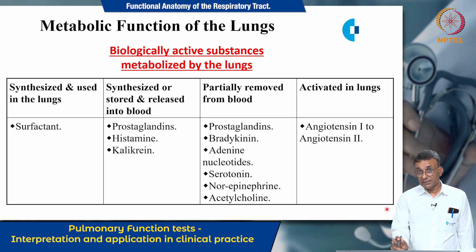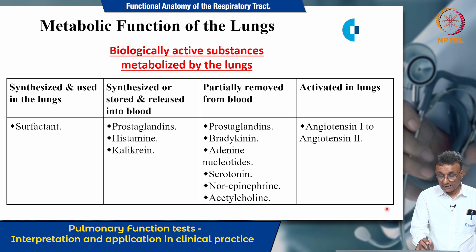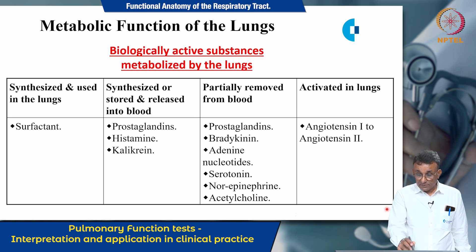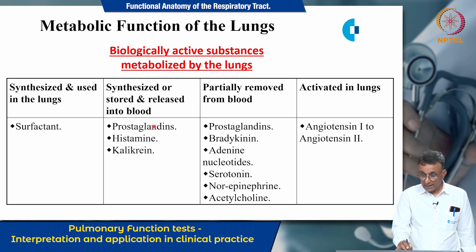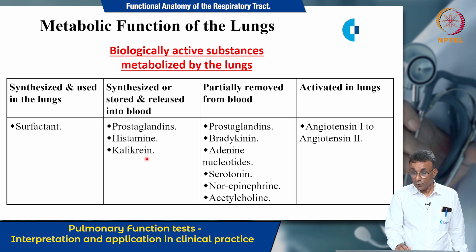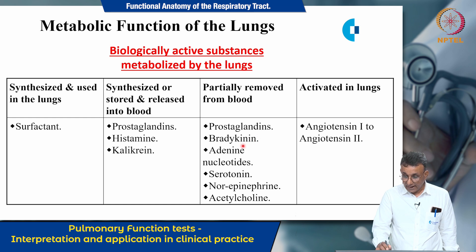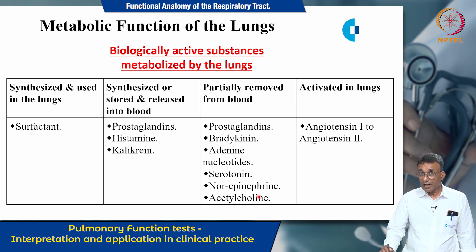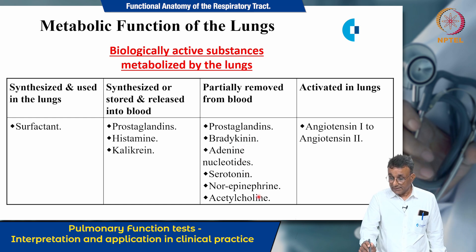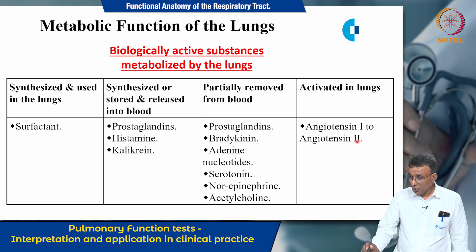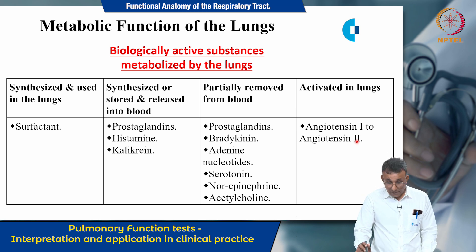Biologically active substances metabolized by the lungs are grouped as follows. Substances synthesized and used in the lungs include surfactant, which reduces the surface tension of alveolar fluid. Substances synthesized or stored and released into the blood include prostaglandins, histamine, and kallikrein. Substances partially removed from the blood include prostaglandins, bradykinin, adenine nucleotides, serotonin, norepinephrine, and acetylcholine. Substances activated in the lungs include angiotensin I converted to angiotensin II, which is concerned with the regulation of systemic arterial blood pressure.